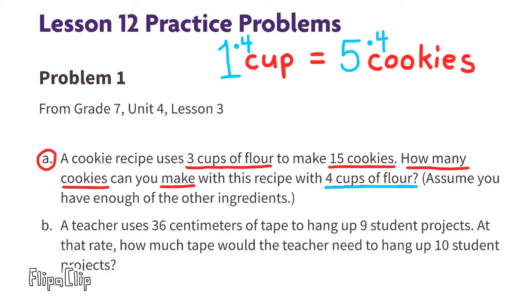Now we can find out how many cookies we can make with 4 cups. 1 times 4 equals 4 cups of flour, and 5 times 4 equals 20 cookies. So you can make 20 cookies with 4 cups of flour.